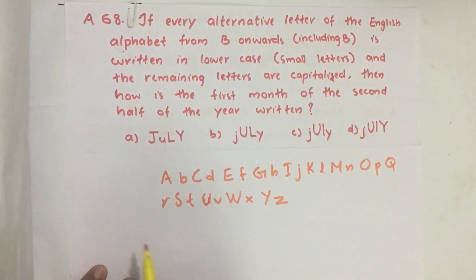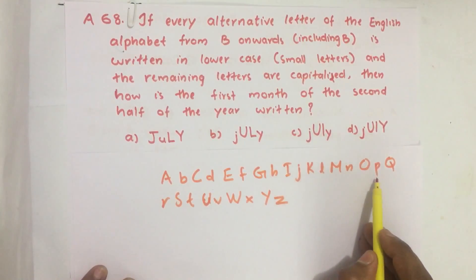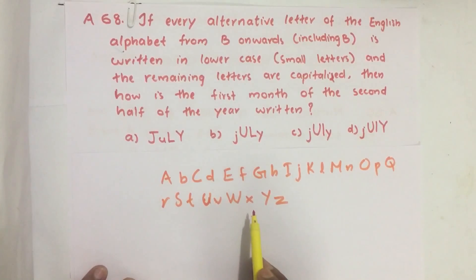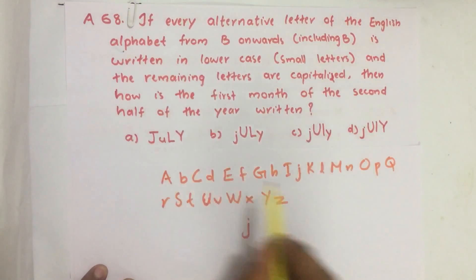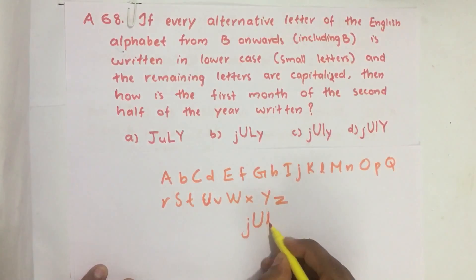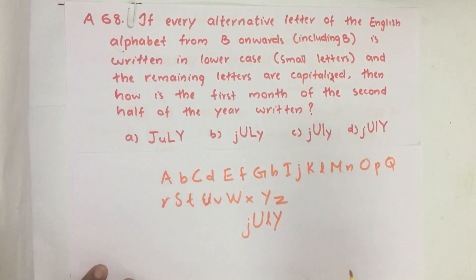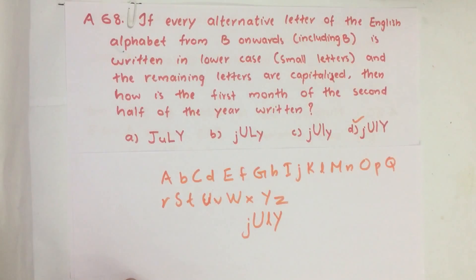Now let us write July from this pattern. J is a lowercase letter, U is a capital letter, L is a small letter, and Y is a capital letter. So July is written as j, U, l, Y. Option D is our answer. If you have any suggestions please do comment, don't forget to like, share and subscribe to the channel.